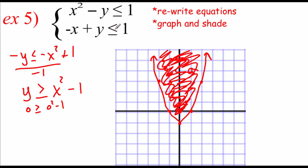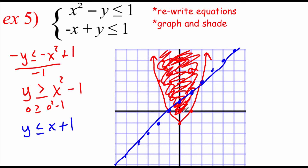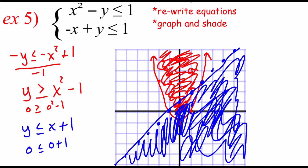Next, we look at negative x plus y is less than or equal to one. Rearranging by adding x to the right-hand side, we get y is less than or equal to x plus one. This line has a y-intercept at one and a slope of one. Sketching this in blue, test point zero, zero gives zero is less than or equal to zero plus one — true — so we shade below this blue line. We then look for the portion shaded by both colors, highlighted in green: it's the region bounded above by the blue line and below by the red parabola.